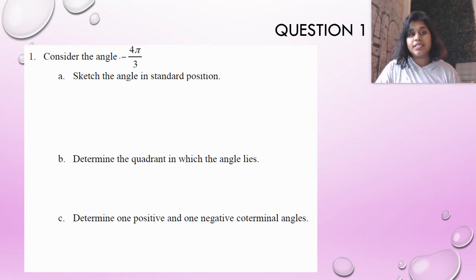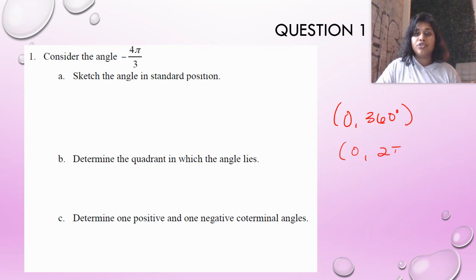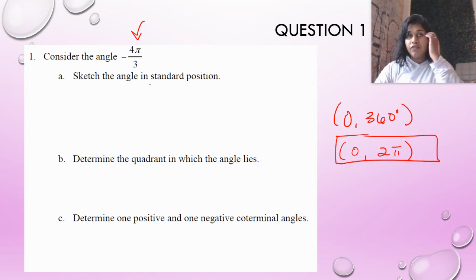So we're going to take this angle and sketch it in standard position. Well, for our angle to be in standard position, it needs to be between 0 and 360 degrees, or if we're in radians, 0 and 2π. So what are we in, first and foremost, degrees or radians? We're in radians. So I'm going to deal with 0 to 2π. Right now, negative 4π over 3 is absolutely not on the interval 0 to 2π because it's negative.